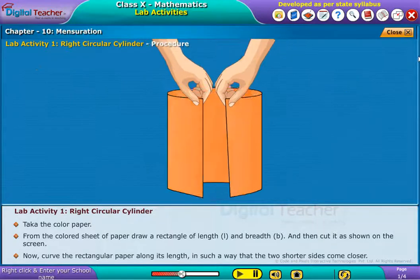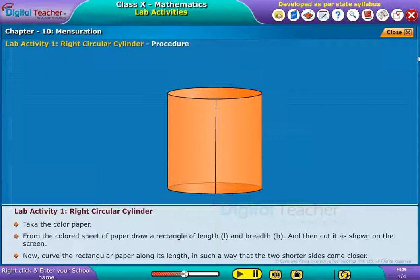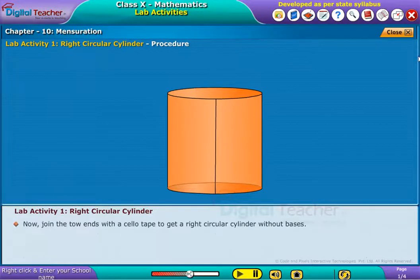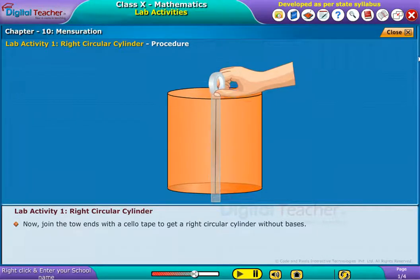Now curve the rectangular paper along its length in such a way that the two shorter sides come closer. Now join the two ends with a cello tape to get a right circular cylinder without bases.